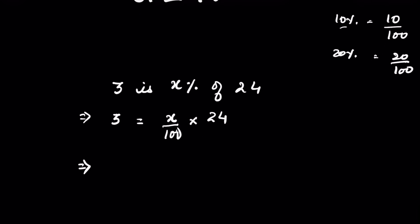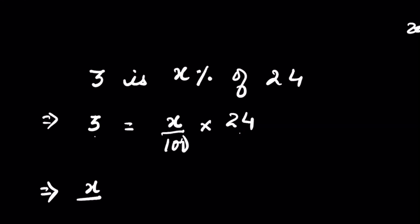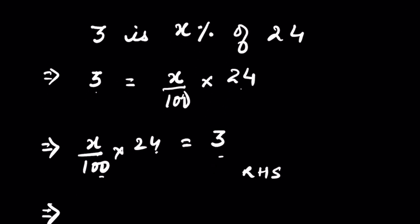This is your equation. We have to find the value of x here. So we can send the right-hand side to the left-hand side or simply switch the equations like this: x over 100 times 24 equals 3. No difference at all. This is right-hand side and this is left-hand side. Multiply both sides by 100 over 24.